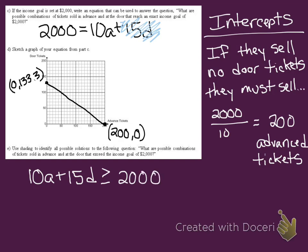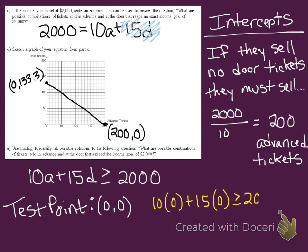On letter E, we're supposed to use shading to identify all possible solutions to the question: what are the possible combinations of tickets sold in advance and at the door that exceed an income goal of $2,000? So now instead of working with an equation, we're working with an inequality. We want to know how many pairs of tickets will let us go beyond our goal of $2,000, so be greater than the goal of 2,000. I'm going to use a test point to figure out which side of the line is the best side to shade.